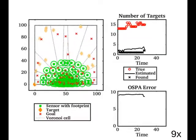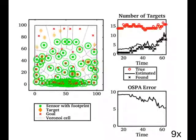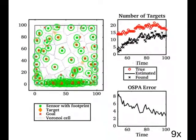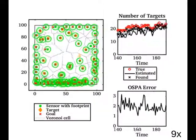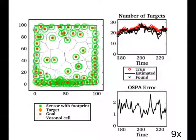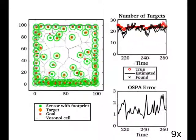The team of robots behaves markedly differently when tracking dynamic targets as opposed to static targets. Instead of uniformly spreading out, most of the team clusters around the boundary of the environment where new targets may appear. The remaining robots spread out over the central region of the environment.